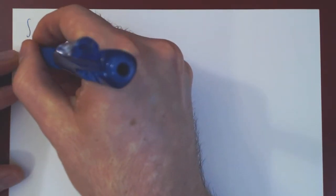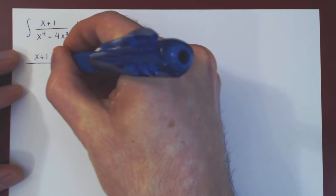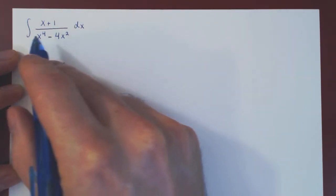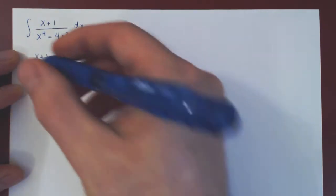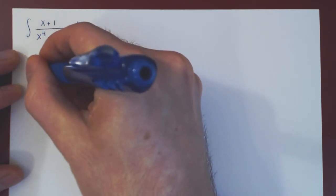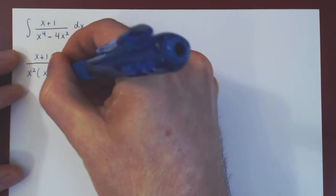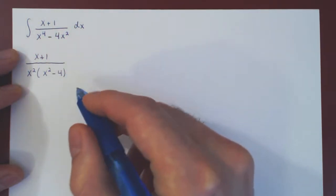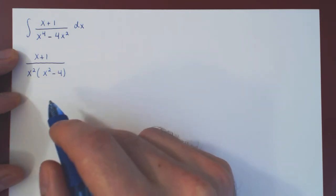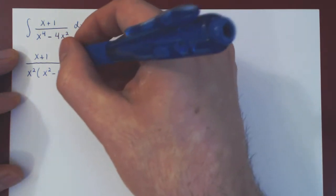We have x plus 1 over — there's a common factor of x squared, so we can factor this out: x squared times x squared minus 4. And we can factor x squared minus 4 as x minus 2 times x plus 2.